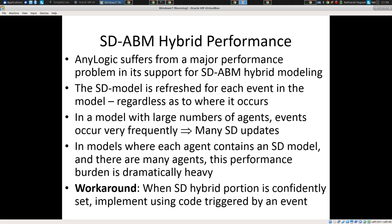AnyLogic suffers from a major performance problem in its support for ABM and hybrid modeling. It's a seriously broken part of the system — not that it doesn't work mathematically and in terms of soundness, it's fine. The problem is the performance is seriously broken and gratuitously problematic. It is perversely slow when you start scaling up to large numbers of agents, each of which has a state. The system dynamics components of the model get recalculated.